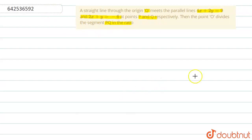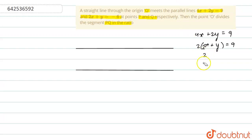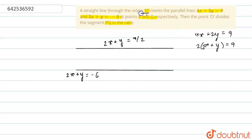So first of all, we have two parallel lines. This first line is 4x plus 2y equals to 9. If we take 2 common, then this line will become 2 into (x plus y) equals to 9, so we can write it as 2x plus y equals to 9 by 2. And the second line is 2x plus y equals to minus 6. Now, there is a line passing through the origin, which means that line may be of the form y equals to mx, since it is passing through the origin.